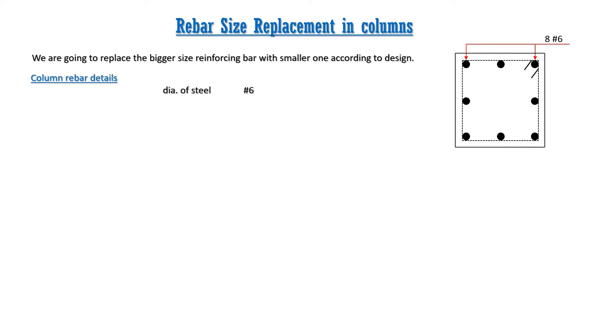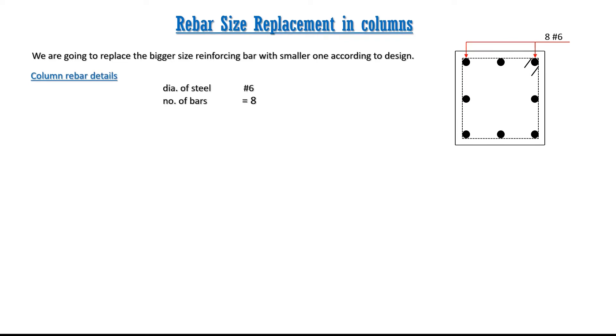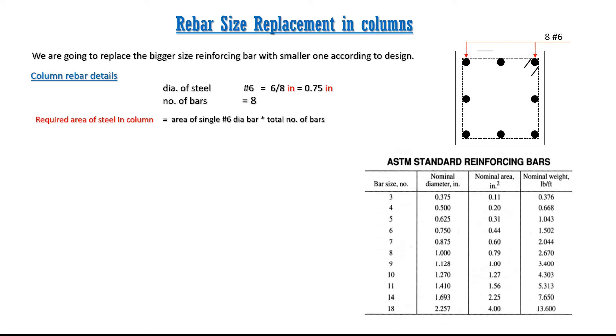There are 8 main bars of number 6 diameter. Number 6 diameter bar means diameter of bar equals to 6 over 8 inches which becomes 0.75 inch. Required area of steel in column is equal to product of area of single number 6 diameter bar and total numbers of bars given in column cross section.